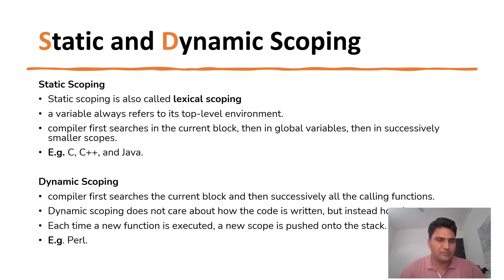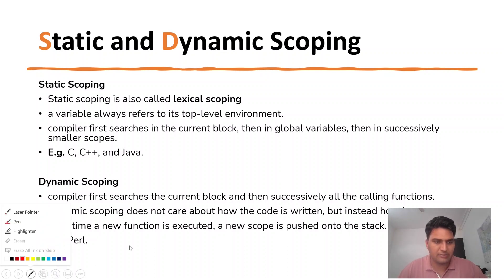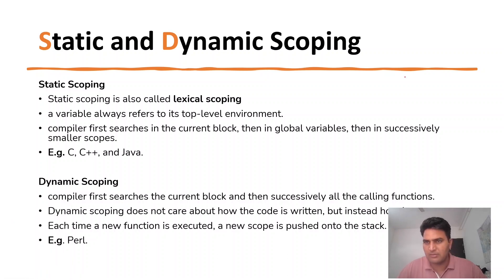Now, what happens in dynamic scoping? The compiler first searches the current block, then successively all the calling functions. So one function is F1 and another is F2.